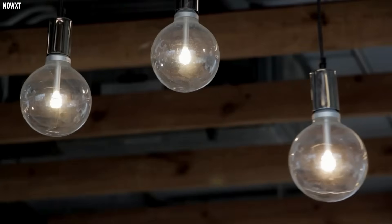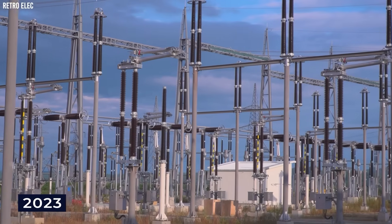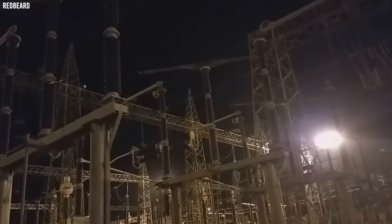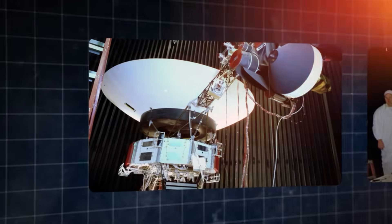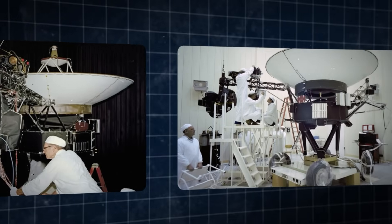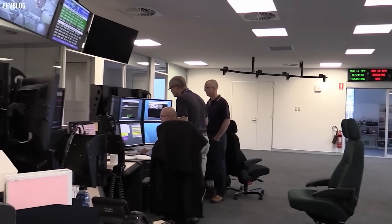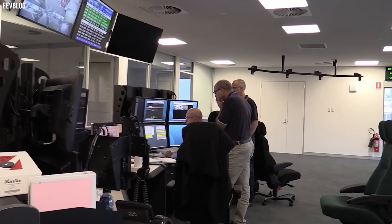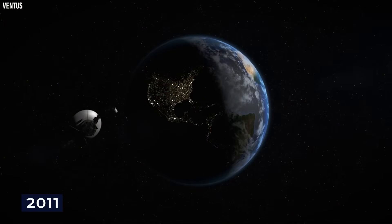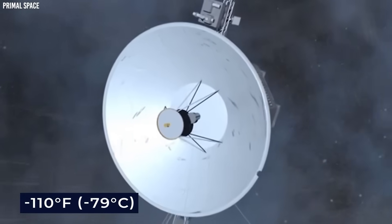Voyager's lasting legacy. Regardless of how the anomalies are ultimately explained, whether by exotic natural processes, technical malfunctions, or something more extraordinary, they mark the final chapter in one of humankind's greatest ventures. A probe originally built to operate for five years has endured for nearly 50, reshaping our view of the solar system and beyond. During its prime, Voyager revealed active volcanism on Io, the structure of Saturn's rings, and a stunning variety of moons. Its extended mission allowed the first direct exploration of the interstellar medium. Even in its final days, it sends back priceless data from a region we cannot explore any other way.